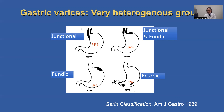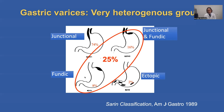These junctional varices, which are an extension of esophageal varices into the stomach along the lesser curvature, comprise three quarters of all gastric varices. Then we have the junctional varices that extend to the fundus — junctional and fundic at 16%, isolated fundic at 8%, and relatively rare at 2%, ectopic varices. But if we look at the fundic and the combined junctional and fundic, fundic varices comprise only one quarter of gastric varices.